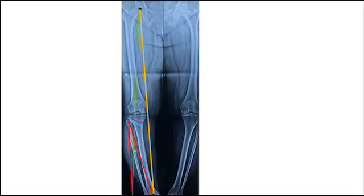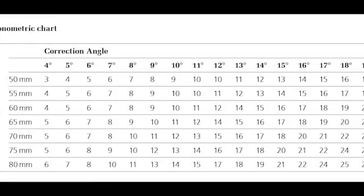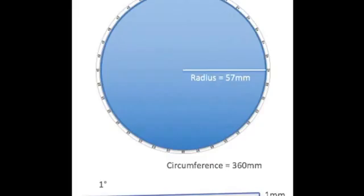The correction angle is then translated to the quantum of medial opening after osteotomy with the help of the Hrnaguz table. The calculation can be simplified by using the rule of 57, which states that a circle of radius 57 mm has a circumference of 360 mm, and each millimeter on the periphery subtends one degree angle from the center.